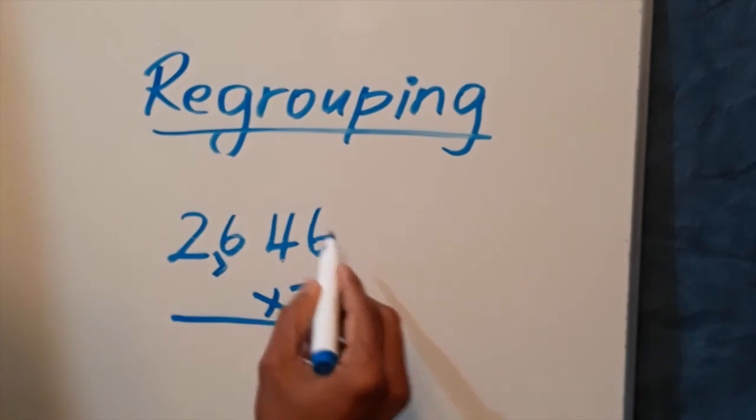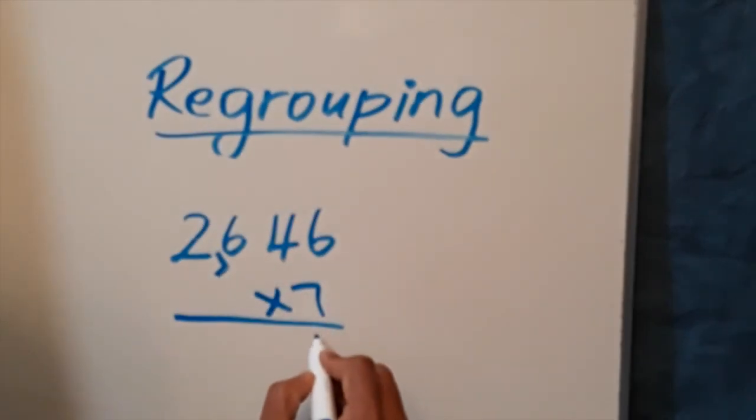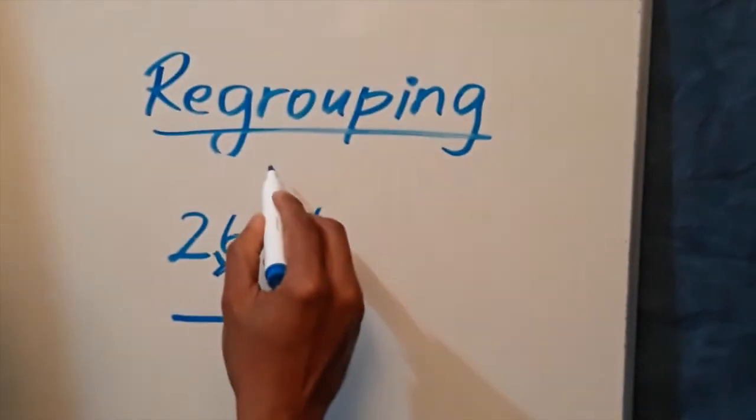Seven times 6 is 42, with the 2 in the ones column and the 4 over the tens.